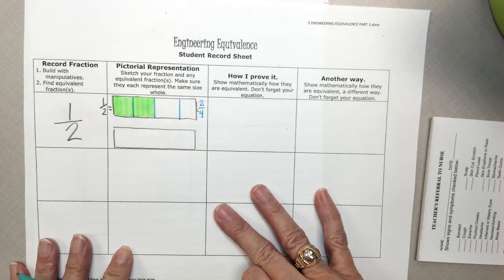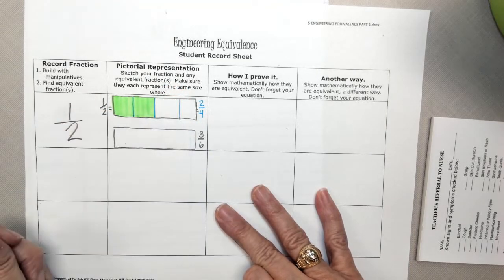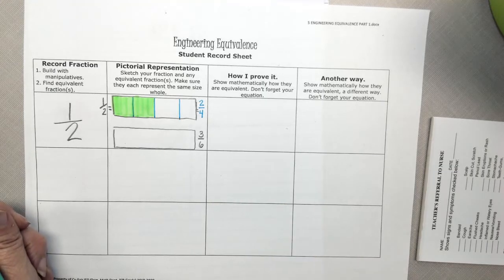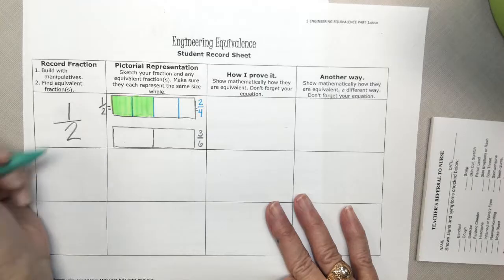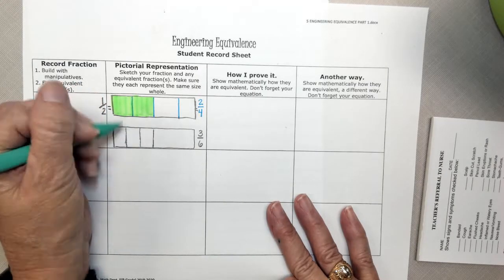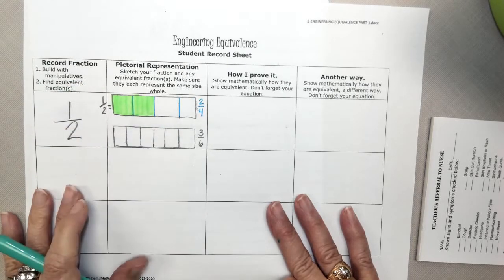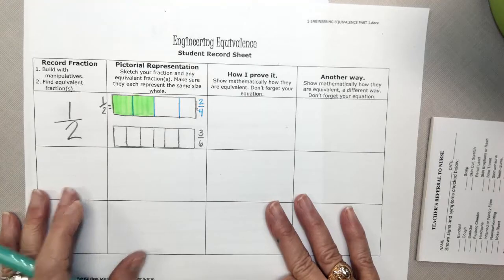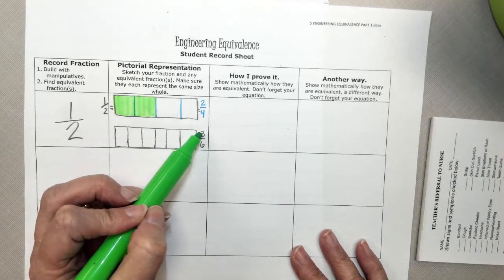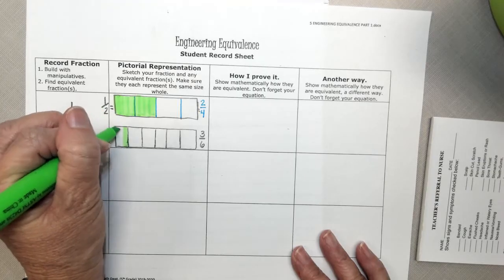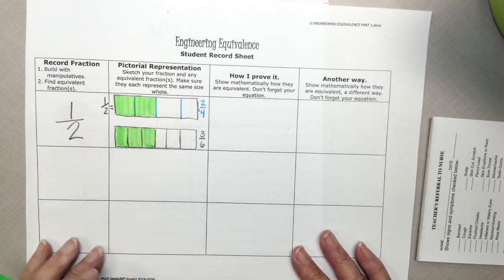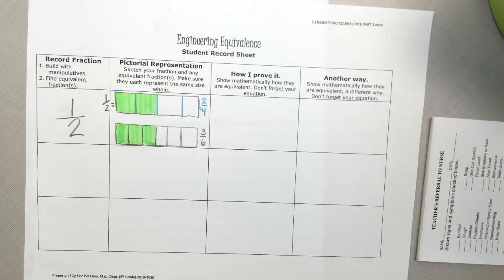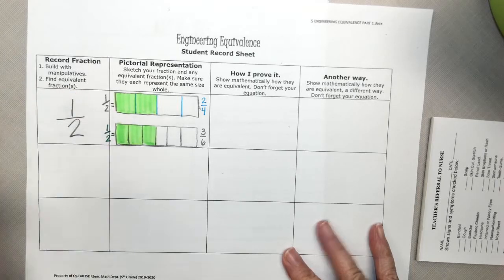Another fraction quantity that I could write down would be 3 sixths. So if I wanted to draw a picture of 3 sixths, I could first start by cutting it in half. And then I would need 3 equal pieces on each side of my half, so I could partition it into 6 equal pieces, just like that. And now I could shade in the numerator amount, 3 of the 6 pieces. So I could shade in 1, 2, 3. And when I look at my picture, is half of my picture shaded? It is.